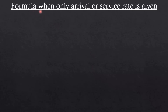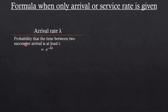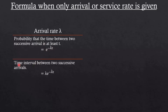When only the arrival rate lambda is given, the probability that the time between two successive arrivals is at least t is given by e to the power minus lambda t. The time interval between two successive arrivals is given by lambda multiplied by e to the power minus lambda t. Comparing these two equations, the time interval formula is simply lambda multiplied by the probability expression.